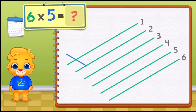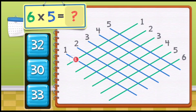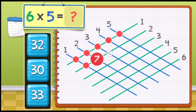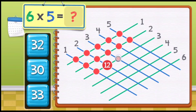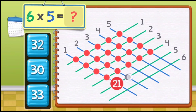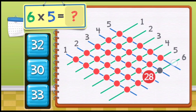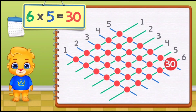6 times 5 equals: 13, 14, 15, 16, 17, 18, 19, 20, 21, 22, 23, 24, twenty-five, twenty-six, twenty-seven, twenty-eight, twenty-nine. Six times five equals thirty.